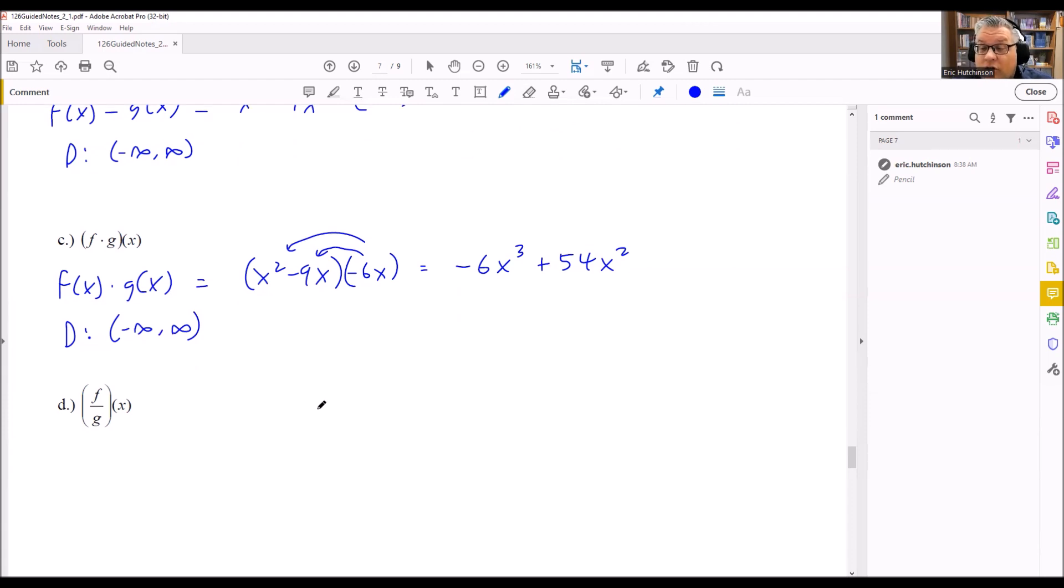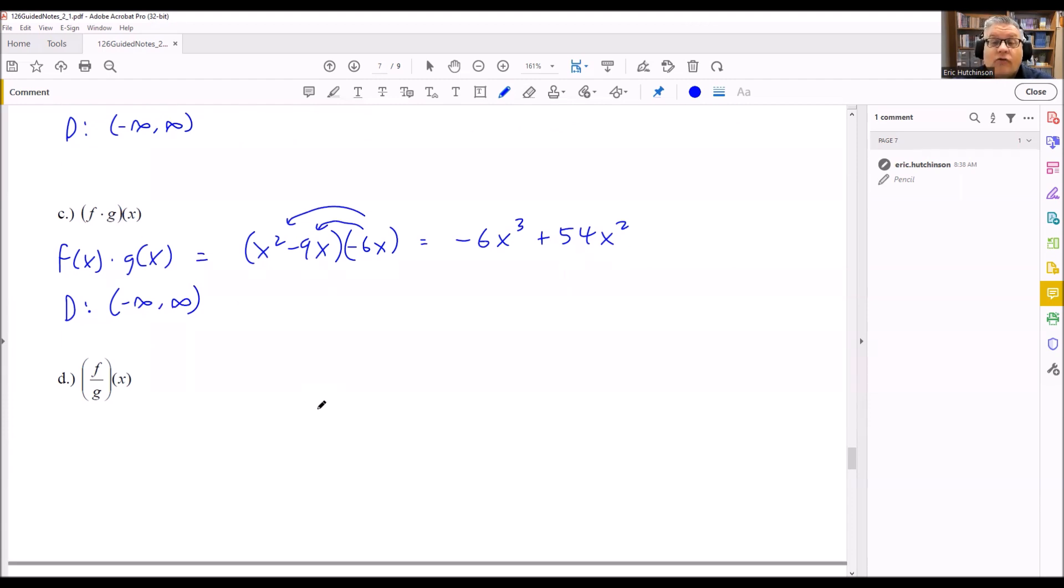Then we got the final one. We have f over g of x. That means that we're doing f of x divided by g of x. Which means we have x squared minus 9x dividing all that by negative 6x.